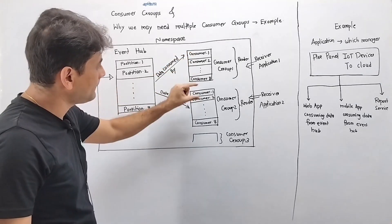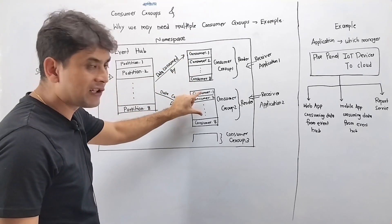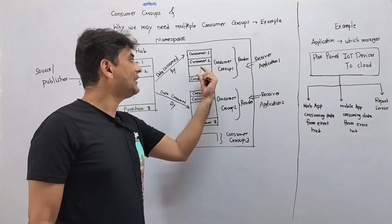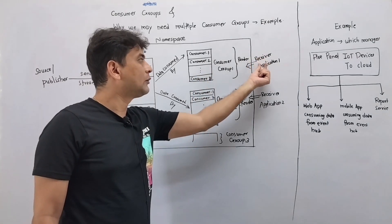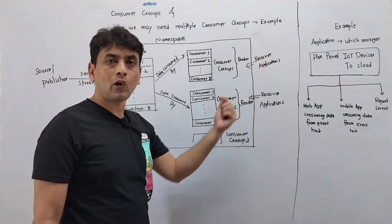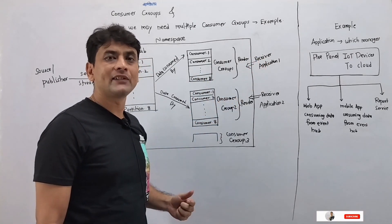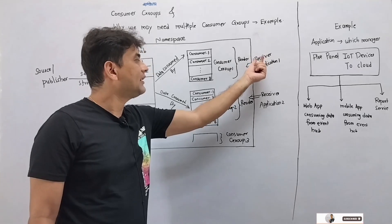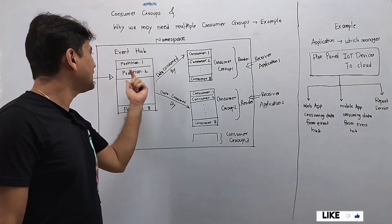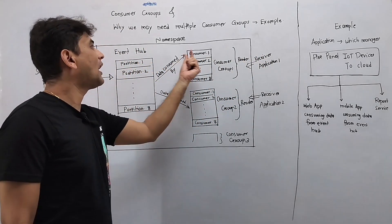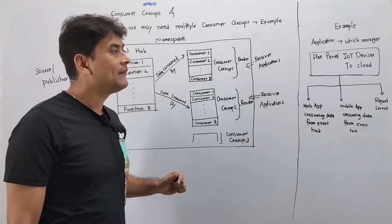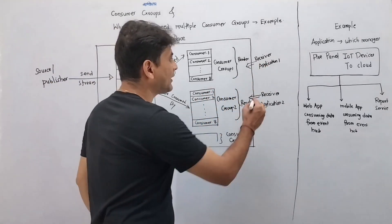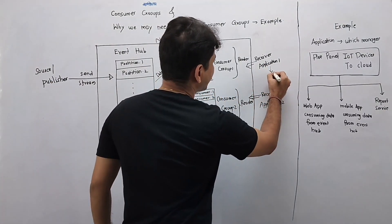This is our consumer group 1 and this is our consumer group 2. Now behind the scenes we have this receiver application or receiver service, and this receiver application is consuming the data from this event app via consumer group. As an example, this receiver application can be an Azure Function.